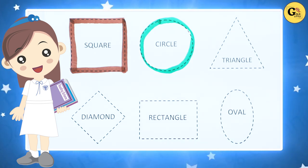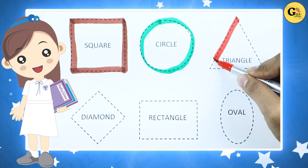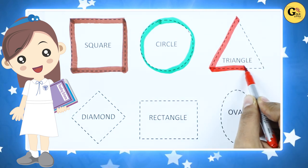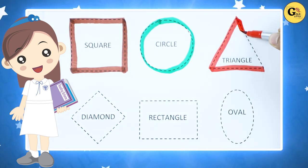Triangle. We make triangle shape with red color. It's a triangle.